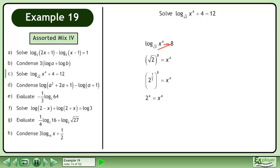Multiply the exponents. Raise each side to the power of 1 over 4 to isolate x. The answer is x equals 2.